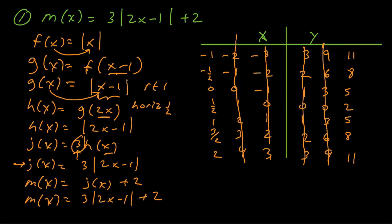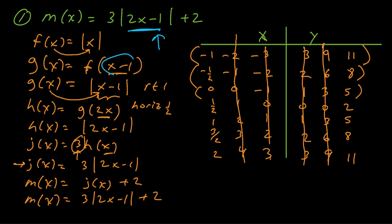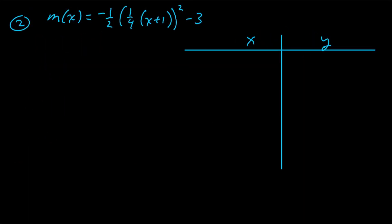Now you can see coordinates like (-1, 11), (-½, 8), (0, 5), and so on to plot the graph. One important note: when building this inside out, you actually apply operations inside the parentheses in the opposite order from PEMDAS. For example, the minus 1 was applied first — shifting right one — then the 2x, which is a horizontal shrink by one-half. When it's inside the parentheses, you reverse the order of operations.